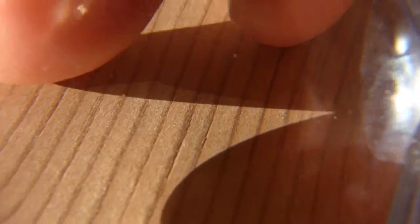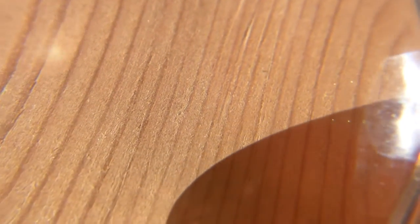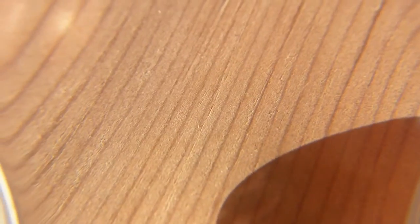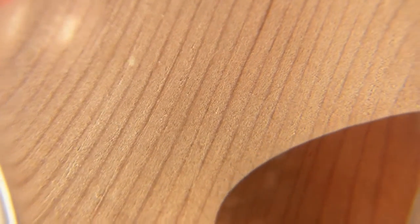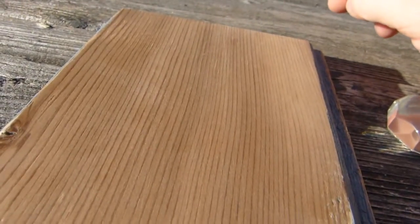And maybe one more pass getting a little closer with this lens. There, so it's like I said it's pretty featureless. All you can see is the growth rings forming these lines running the length of the board.